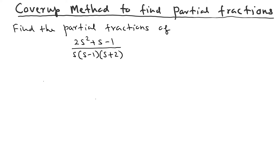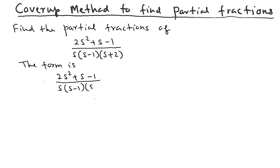First, we write the form. We have 2s² + s − 1 over s(s − 1)(s + 2) identical to A/s + B/(s − 1) + C/(s + 2). So we write different linear factors in the denominator.